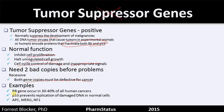Examples: the RB gene occurs in 30 to 40 percent of all human cancers — even higher than inheritance, higher than infection. P53 prevents replication of damaged DNA in normal cells. You can imagine if you're out in the sun, exposed to chemicals, or just normal processes, you get a mutation in your DNA. Normally what would happen is that cell won't be able to reproduce if it can't be fixed by the time it gets around to mitosis. Examples are APC, MEN, FNF1.